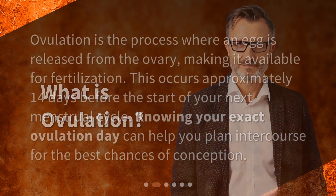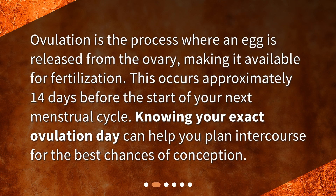What is ovulation? Ovulation is the process where an egg is released from the ovary, making it available for fertilization. This occurs approximately 14 days before the start of your next menstrual cycle. Knowing your exact ovulation day can help you plan intercourse for the best chances of conception.